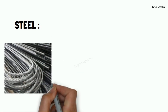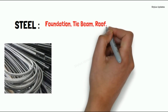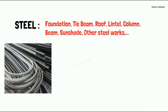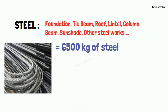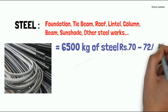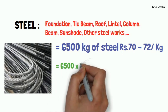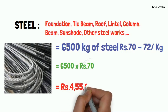Steel is used in foundation, tie beam, roof, lintel, column, beam, sunshade, and other steelworks. For a 1400 square feet house, 6500 kilograms of steel are required. The current market rate of steel is Rs. 70 to 72 per kilogram. When you multiply 6500 by Rs. 70, you get Rs. 4,55,000.